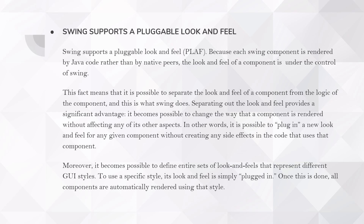The second feature is that Swing supports a pluggable look and feel. Because each Swing component is rendered by Java code rather than by native peers, the look and feel of a component is under the control of Swing. This means it is possible to separate the look and feel of a component from the logic of the component, and this is what Swing does. Separating out the look and feel provides a significant advantage — it becomes possible to change the way a component is rendered without affecting any of its other aspects. In other words, it is possible to plug in a new look and feel for any given component without creating any side effects in the code that uses that component. Moreover, it becomes possible to define entire sets of look and feels representing different GUI styles, and to use a specific style, its look and feel is simply plugged in. Once this is done, all components are automatically rendered using that style.